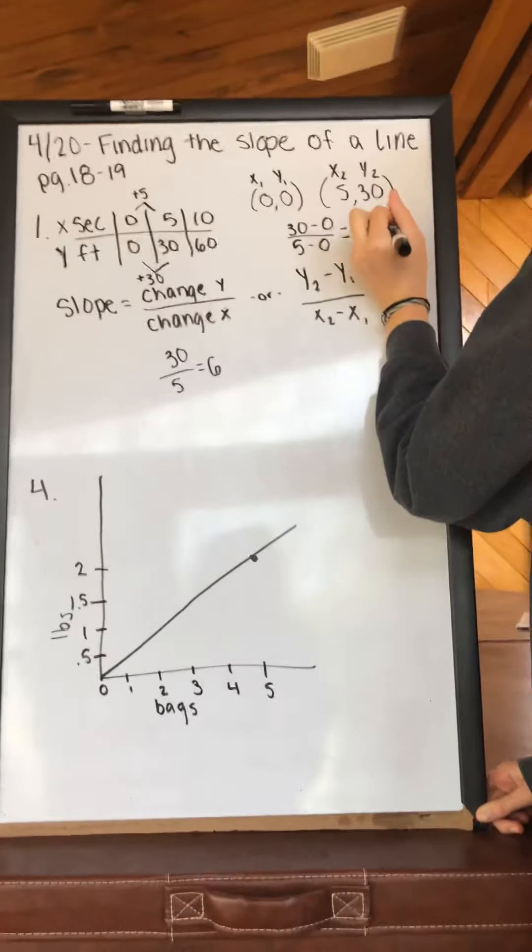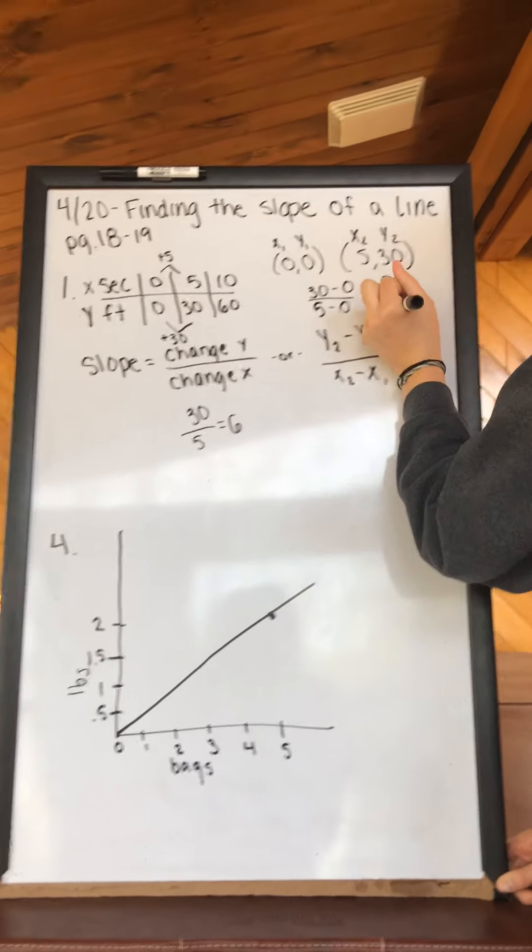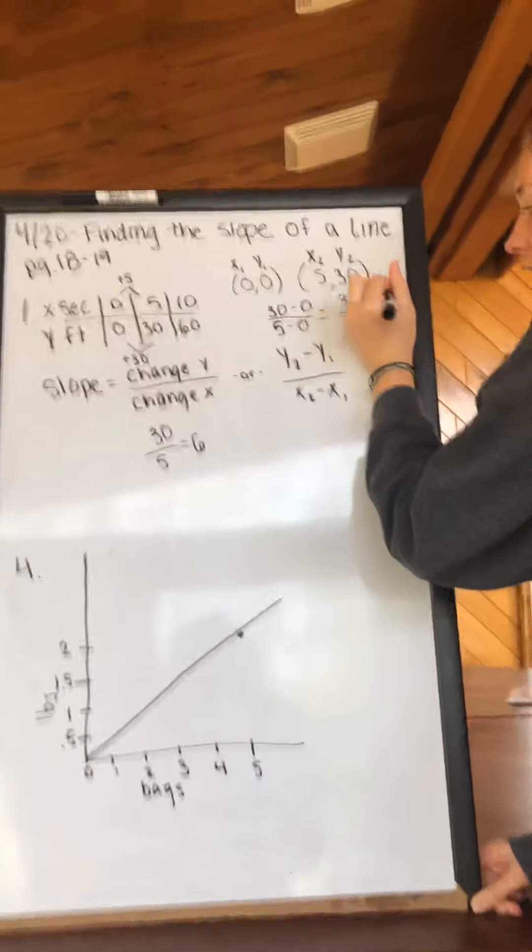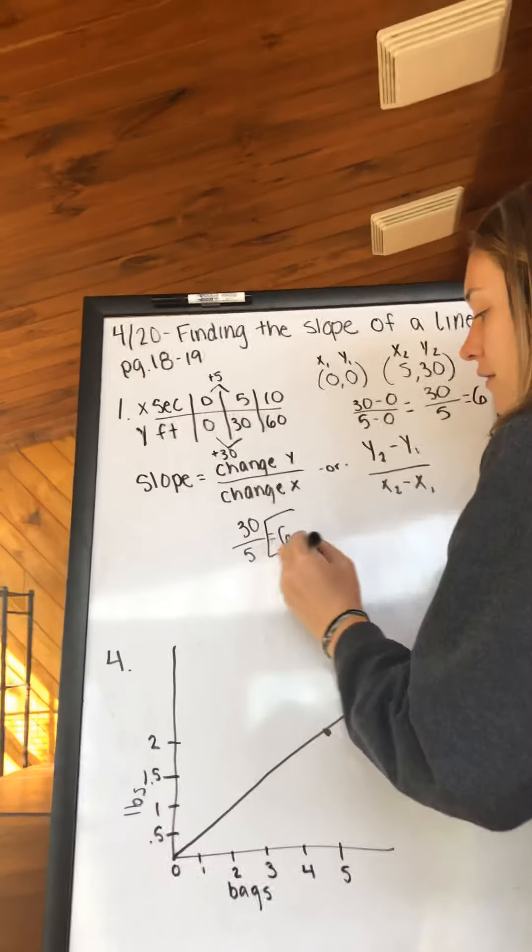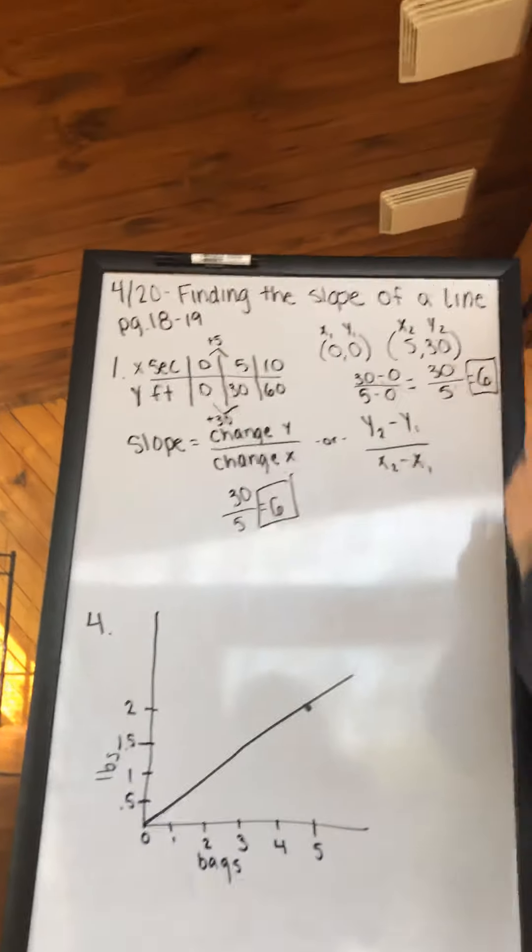30 minus 0 is 30. 5 minus 0 is 5. 30 divided by 5 is 6. So we got 6 for our slope, two different ways.